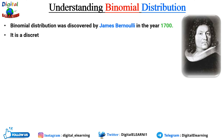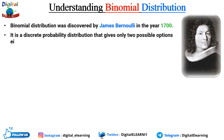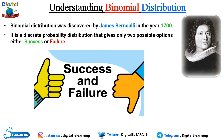In statistics, binomial distribution is a discrete probability distribution that gives only two possible outcomes in an experiment or trial — that is, success or failure. The underlying assumptions are: there are only two possible outcomes of a trial, each trial has the same probability of success, and each trial is mutually exclusive, meaning independent of one another.